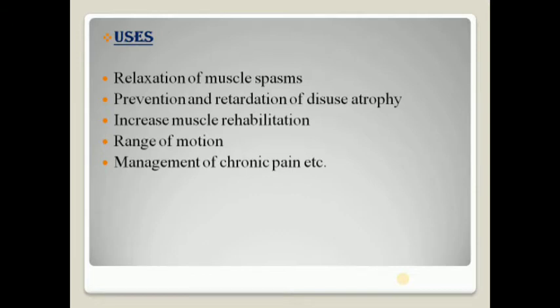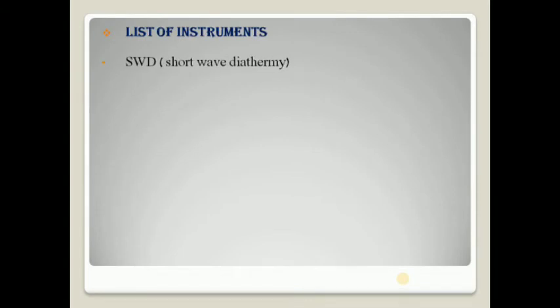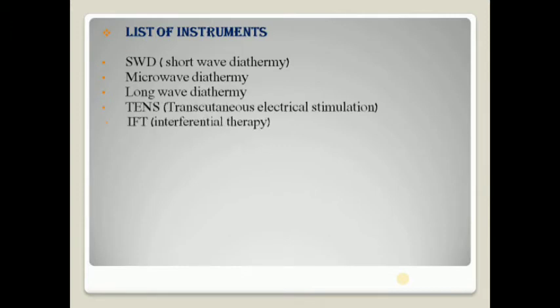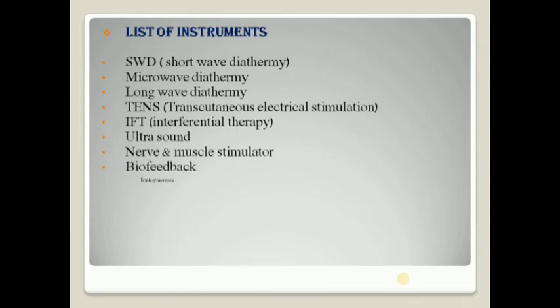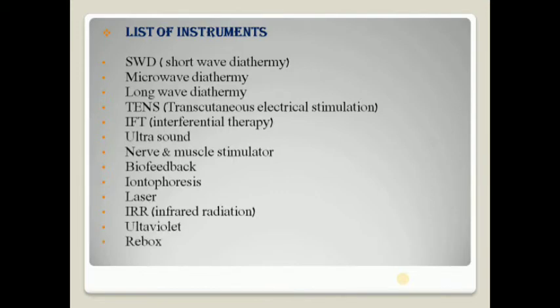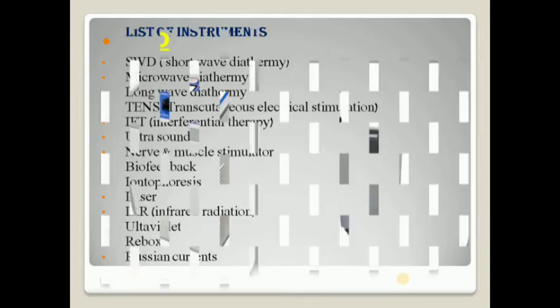There are various types of instruments used in electrotherapy. I made a list of those instruments which are: SWD, microwave diathermy, long wave diathermy, TENS, IFT, ultrasound, nerve and muscle stimulator, biofeedback, iontophoresis, laser, IR, ultraviolet, REBOX, and Russian currents. If you know about other instruments, then let me know in the comment box.